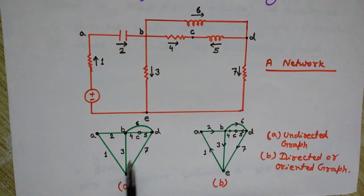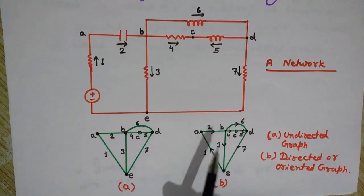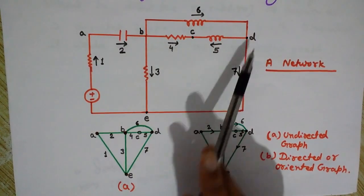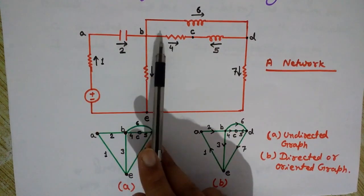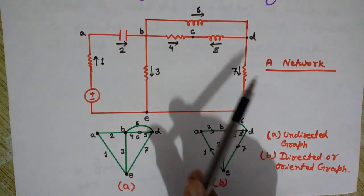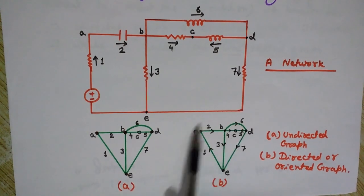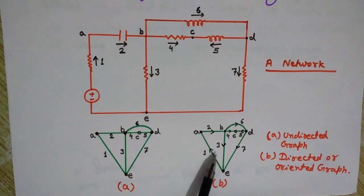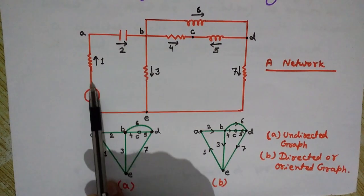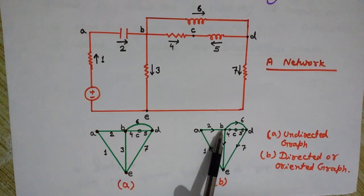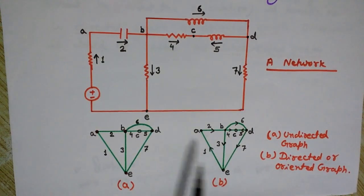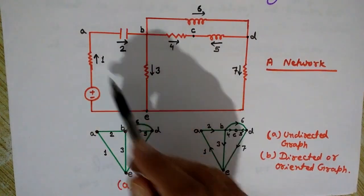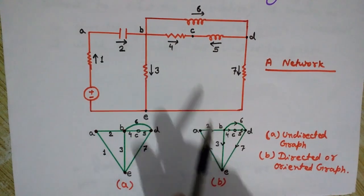If we represent the components with their orientations — these are the orientations for the currents — and if we mention them in the graph, then it is a directed or oriented graph. As you can see, branch number one is directed upward, and branch number two is directed rightward. So this is the same oriented graph as seen in the network — the same orientations are used here.